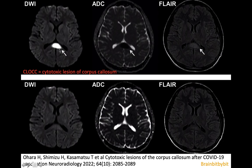This is a 23-year-old male who presented 14 days after COVID vaccination. His PCR for COVID was negative, so he had no active COVID infection. He was disoriented, had amnesia, and was confused. On MRI on day 18, you can see restricted diffusion with faint high signal on the FLAIR image, which normalized at day 26. Eight months after this episode, he still had no residual symptoms.